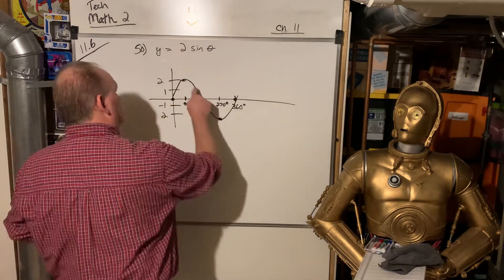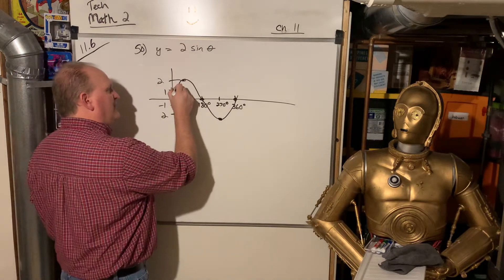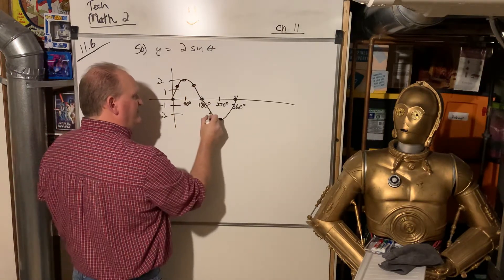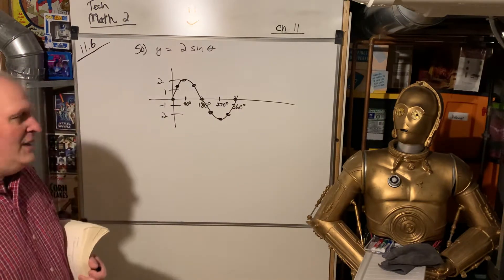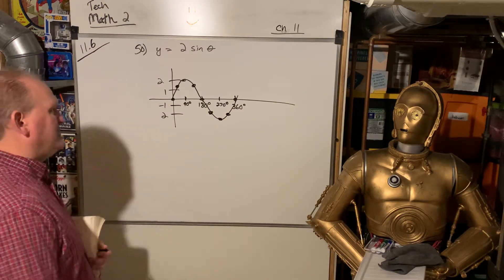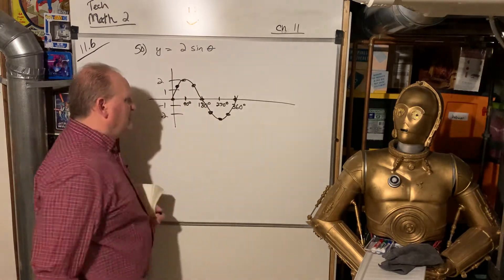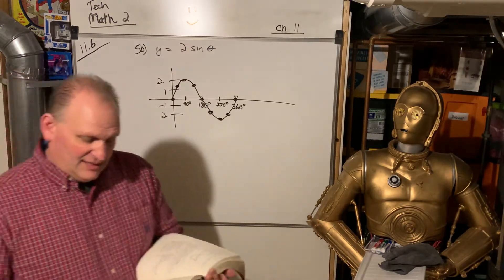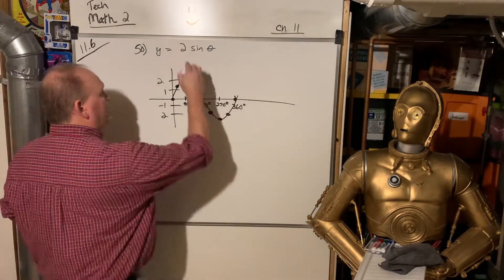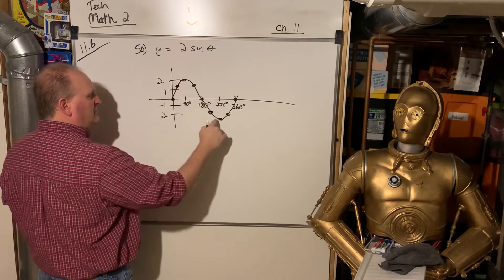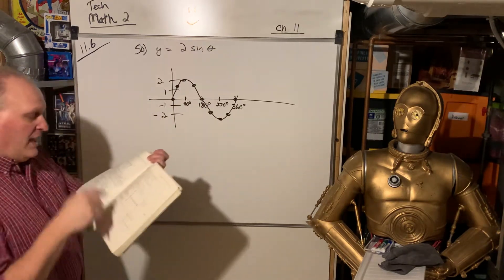They also suggested adding points at 45, 135, 225, and 315 degrees — those would just give 0.71 values. The big picture is that the 2 pulled the curve up to 2 and down to negative 2.